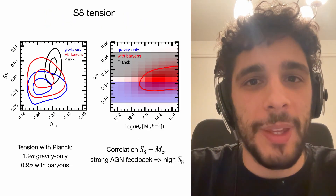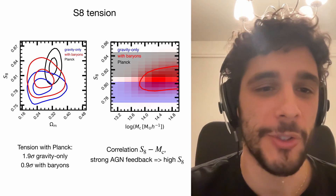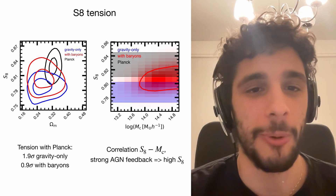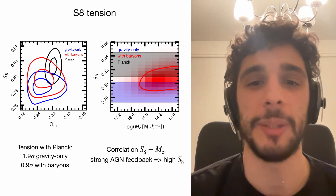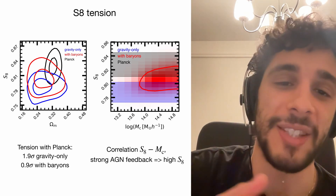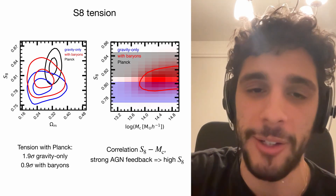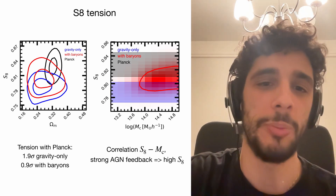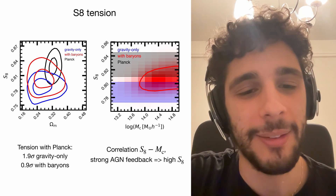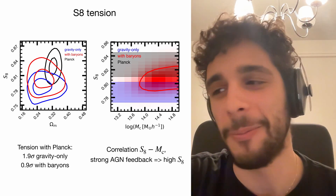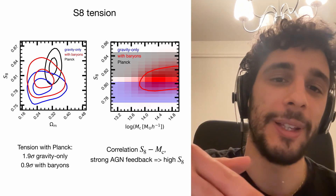So, the S8 tension. On the left I show contours in S8 and Omega_matter for our fiducial case: red with baryons, blue without. Comparing to Planck chains re-run with DES priors for a fair comparison, our fiducial case gives 0.9 sigma tension with Planck — basically no tension. The gravity-only case using all scales gives 1.9 sigma.